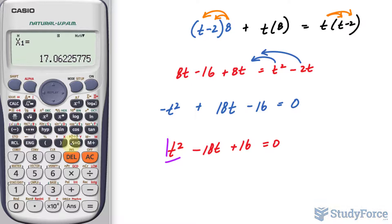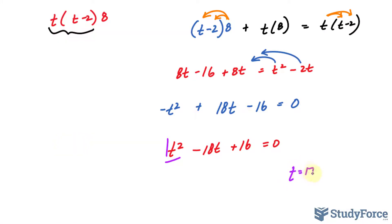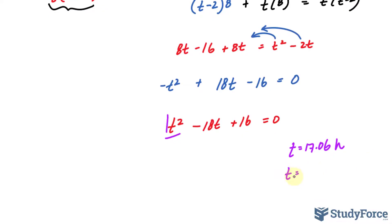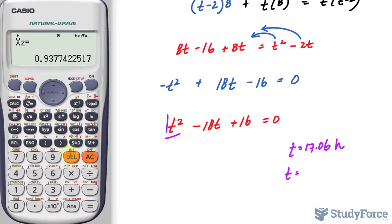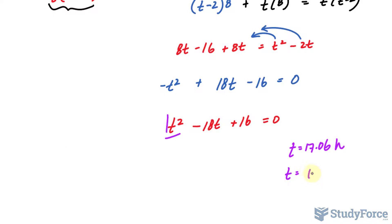We get two solutions. One that's 17.06, 17.06, and that's hours. And another solution, that's 0.937, 0.937.